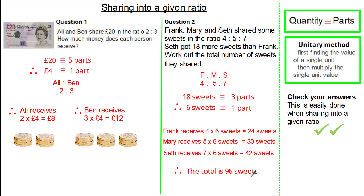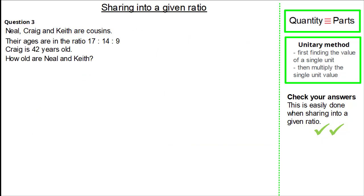Remember, we can always check by referring back to the question. The question stated Seth gets 18 more sweets than Frank. Frank receives 24 sweets and Seth receives 42 sweets — a difference of 18 sweets. So yes, we're right. Checking your answers is easily done when sharing into a given ratio.